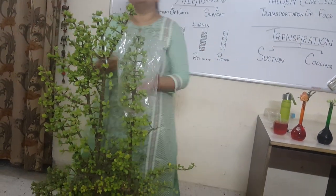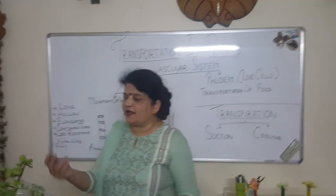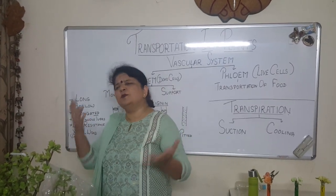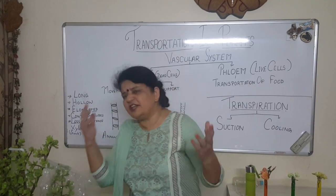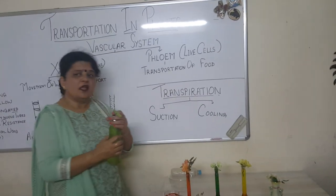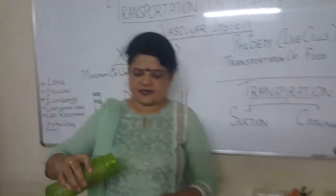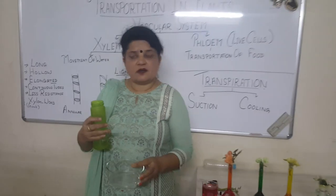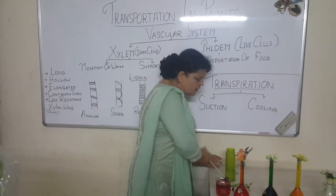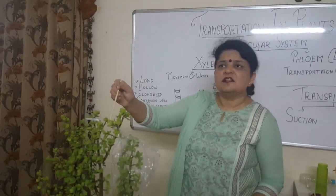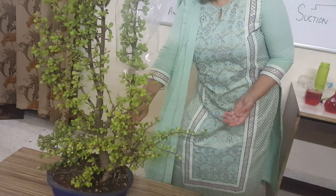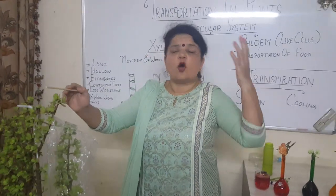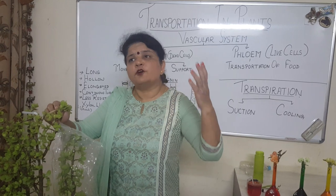You might be wondering how water reaches all the way to the tip of the plant — the last leaf. You might have seen very tall trees around you, 30, 40, 50 meters high. If we pour water, it falls down due to gravitational force. So by now you might be wondering: how does water reach up against the force of gravity? How does it go from the bottom to the top of a tall tree?